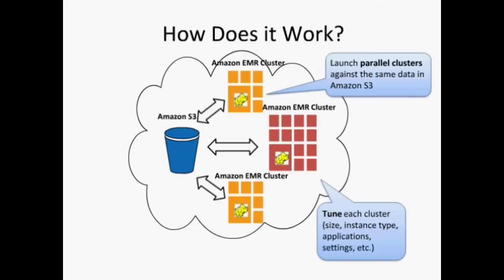An EMR cluster has three node types: master node, core node running HDFS, and task node that is not. You can run all or part of your cluster on spot. Many customers in production use spot to save significant money and speed up processing. Another unusual feature of EMR: if you have data in Amazon S3, you can launch multiple EMR clusters pointing to the same data set, allowing you to provision and optimize clusters for given applications — one optimized for CPU, another for I/O — without replicating data. S3 serves as a single version of the truth.